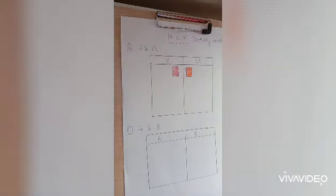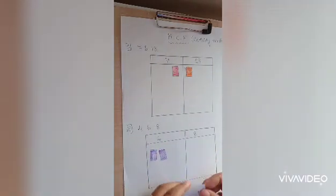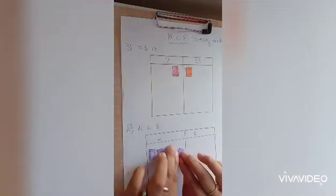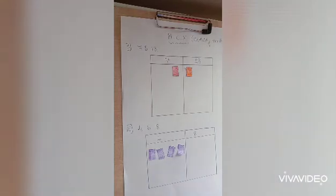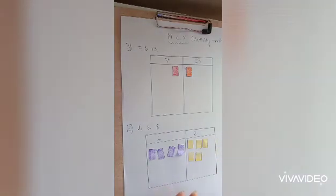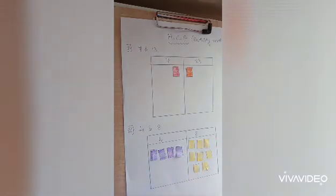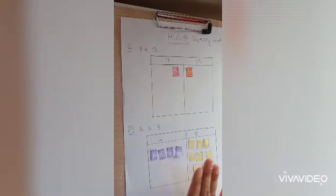Now let us go to the second example. Here I took the numbers four and eight. For four I am using four strips, and for eight I am using eight strips. Between four and eight, which is the smaller number? Yes, four. So from the bigger number, eight, remove four strips.